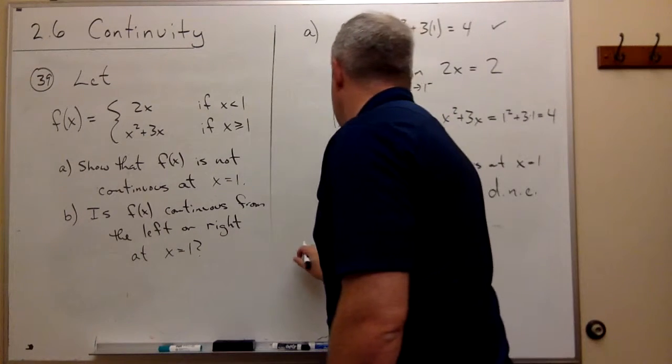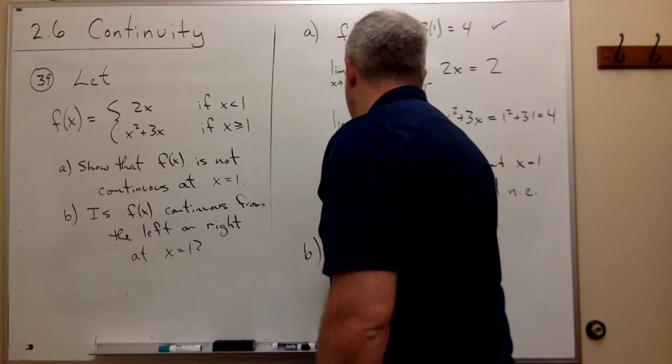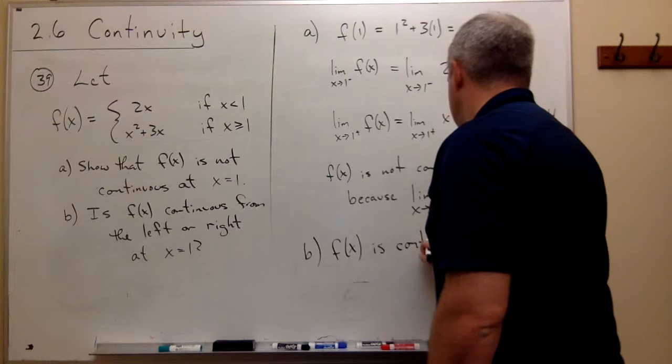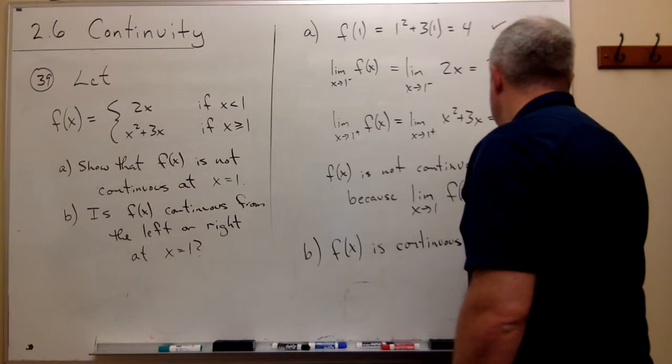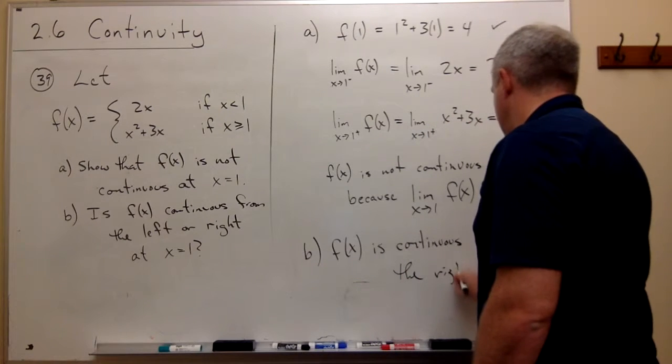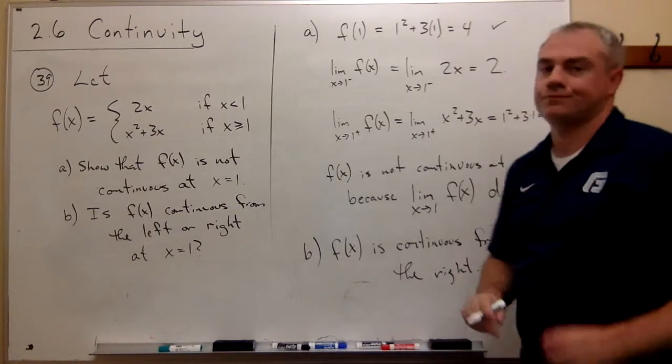So for part B, f(x) is continuous from the right. And we're done.